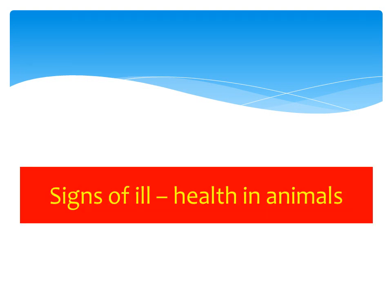Let us have a look at signs of ill health in animals. When an animal is not feeling well, what are some of the signs you are likely to observe? Number one: we have stunted or retarded growth — the animal does not grow. It remains the same size it was last year. That is what we call stunted or retarded growth.